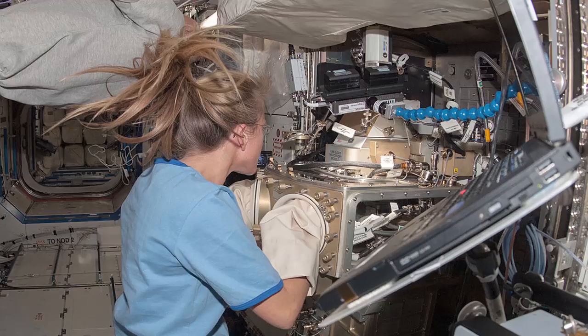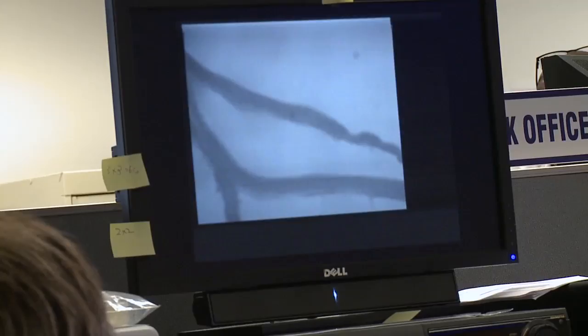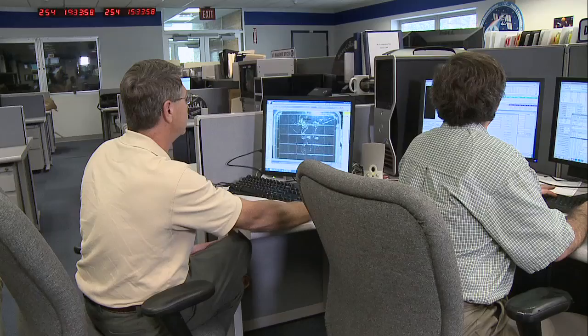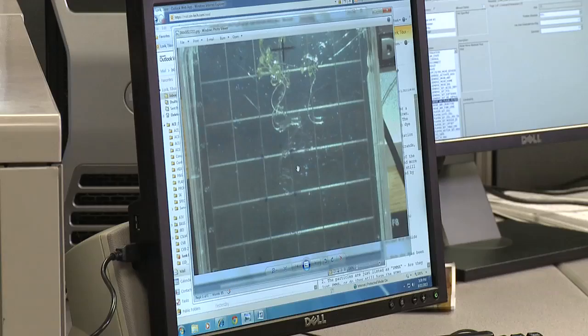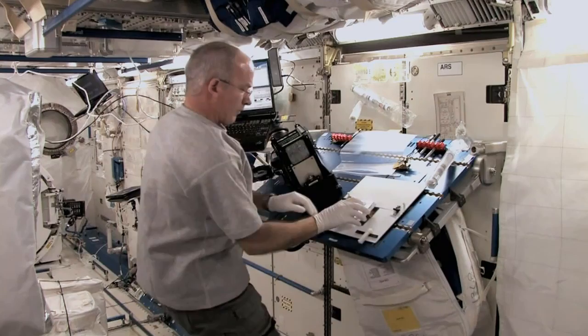Our new experiment, called CARA (Characterizing Arabidopsis Root Attractions), stems from the idea of how we determine the major impact of light on root growth. A very simple approach is to grow plants in the same kind of square petri plates we used for our other experiment, just in the environment of the space station.